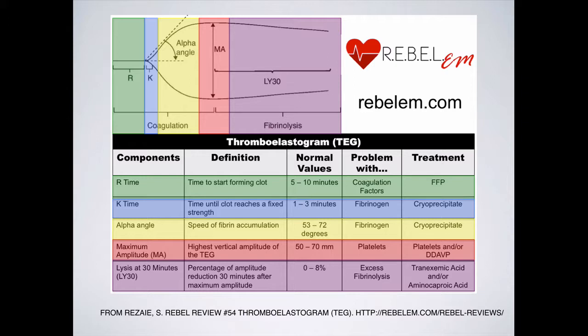For example, with coumadin you might want to give Octaplex, Beriplex, or prothrombin complex concentrate. Your K time is the time from when you start forming a clot to when you're at two millimeters amplitude. Your maximal amplitude is your maximal clot thickness, and that reflects the overall quality of the clot — the bigger picture, with platelets, DDAVP, cryoprecipitate, and FFP all coming together. The angle between the end of the R time and the maximal amplitude is called the alpha angle, and that reflects the need for cryo — it's essentially a fibrinogen-based parameter.